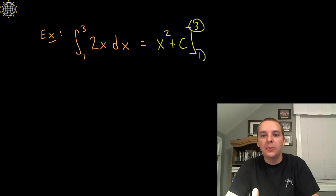And so we plug in a 3 and we plug in a 1. So here we go, we'll plug in a 3, and then we'll plug in a 1, and then we'll subtract. So 3 squared is 9.